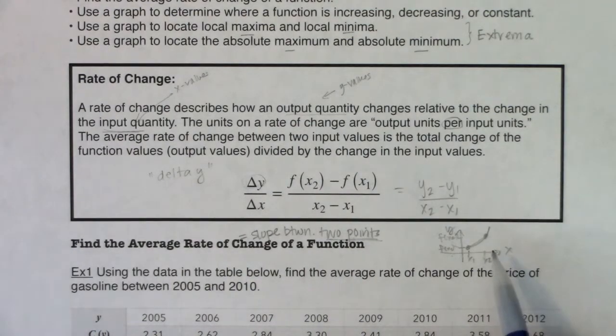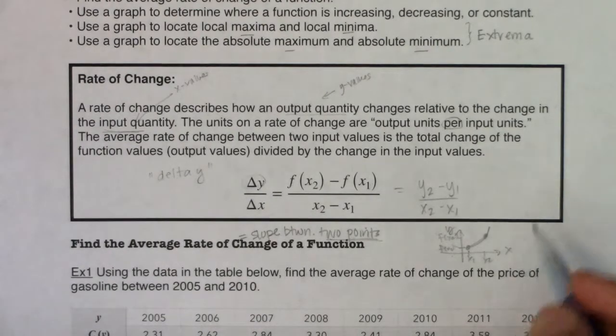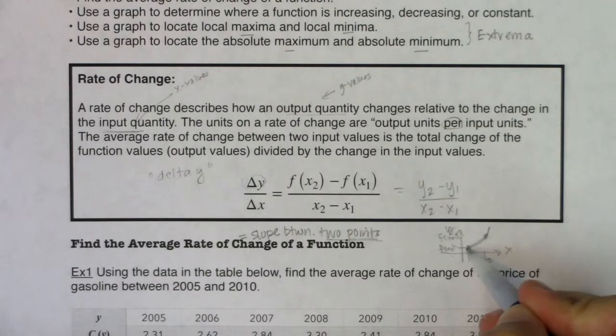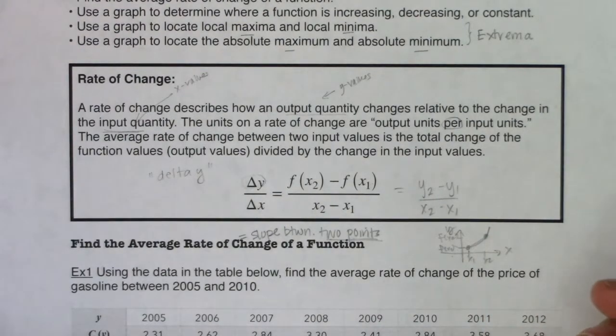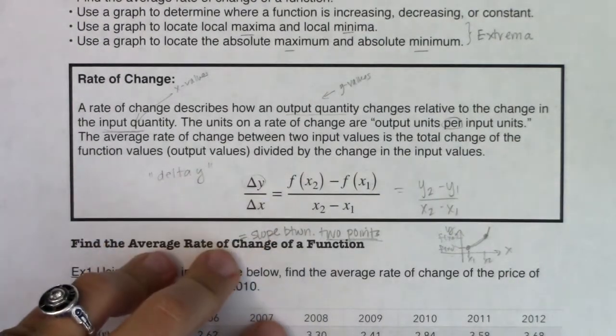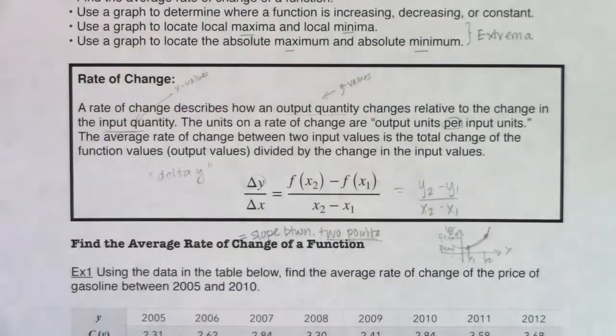So when you hear me talk about average rate of change, slope between two points. And as you progress, especially once you get into calculus, we're going to look at the slope at one point, and we're going to talk about the slope of a tangent line. This is sometimes referred to as the slope of a secant line, and they say secant because it has two points. So in pre-calc, you look at slopes between two points, where in calculus, you look at slopes at exactly one point.